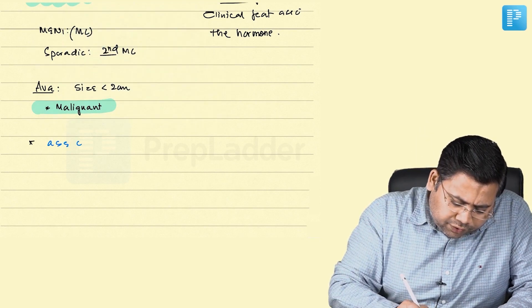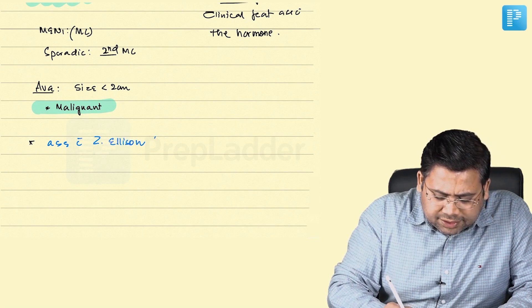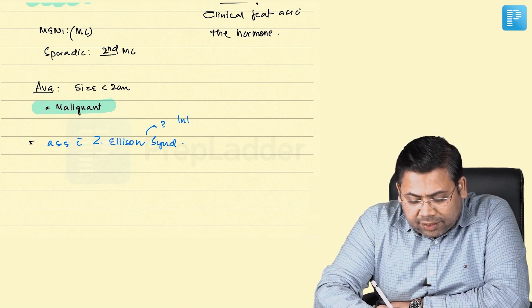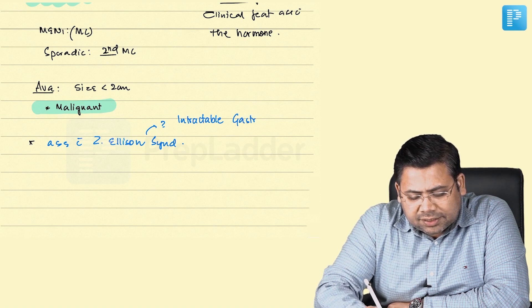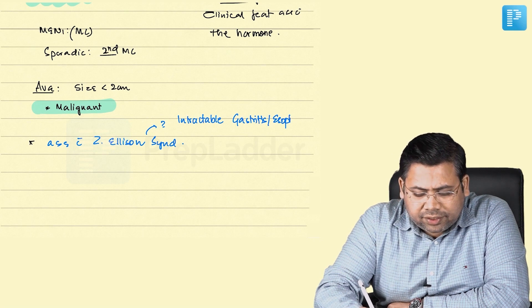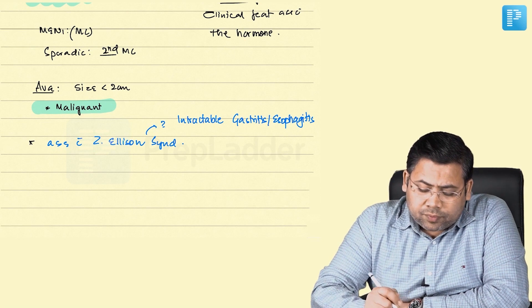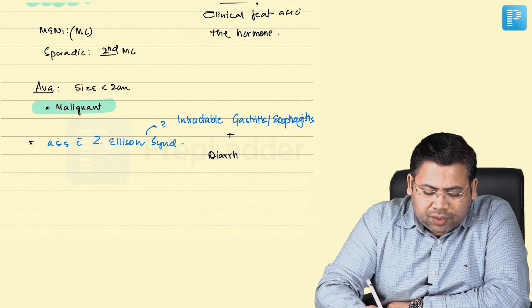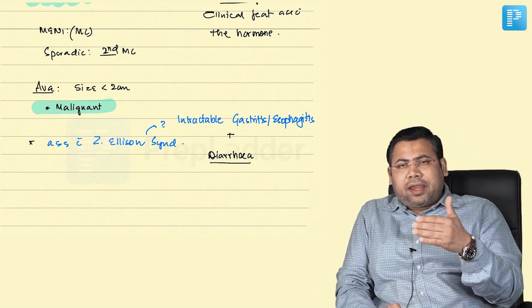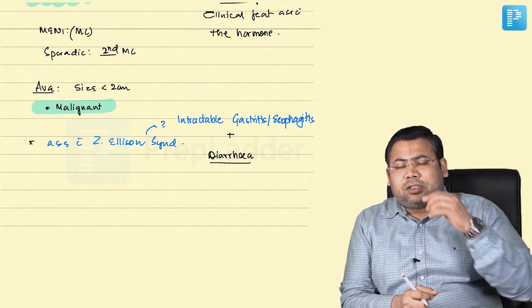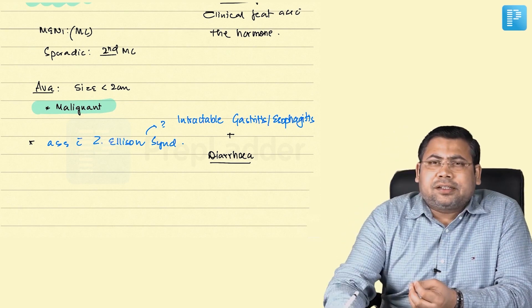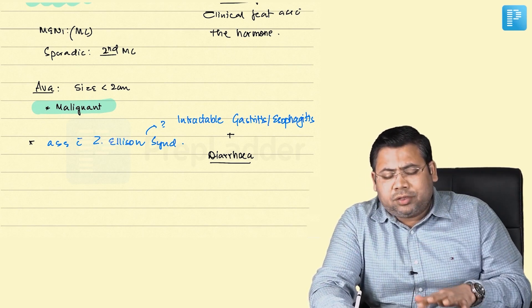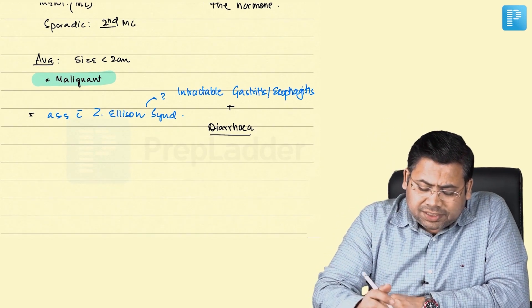Gastrinoma may be associated with Zollinger-Ellison syndrome, which presents with intractable gastritis and esophagitis. Along with that, the patient will have diarrhea. This diarrhea occurs because excess acid is released into the small intestine, neutralizing the intestinal milieu and rendering it functionless, leading to malabsorption or steatorrhea.